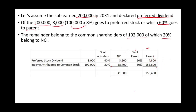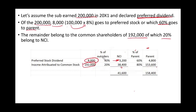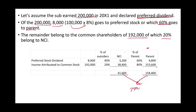Reconciling the distribution: of the $8,000 preferred dividend, 40% ($3,200) goes to the NCI and 60% ($4,800) goes to the parent. Of the $192,000 common income, 20% ($38,400) is the NCI share and 80% ($153,600) goes to the parent. Therefore, total NCI share is $3,200 + $38,400 = $41,600, and the parent's total share is $158,400. These should add up to $200,000.